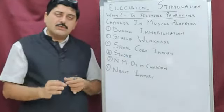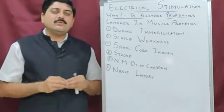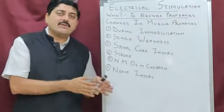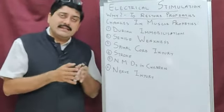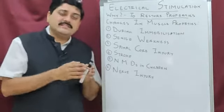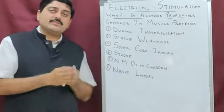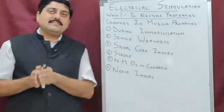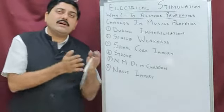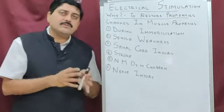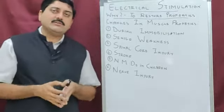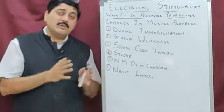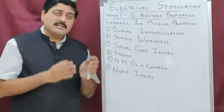In stroke — a hemorrhagic or ischemic injury to the brain — the coordination of the muscle is affected overall, leading to weakness of the antagonist group of muscles. The agonist muscles tend to go into spasticity due to central nervous system injury, while the antagonists — extensors in the arm and flexors in the leg — tend to go weak. Electrical stimulation can also be used to reduce spasticity and regain voluntary control of the spastic muscles.